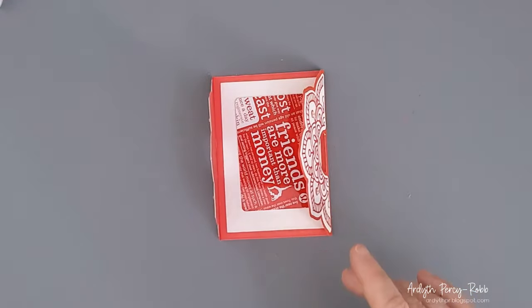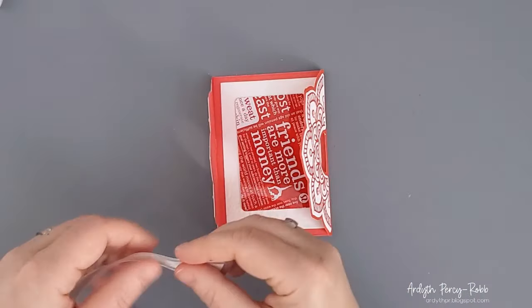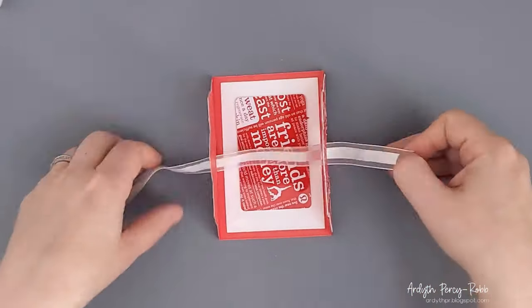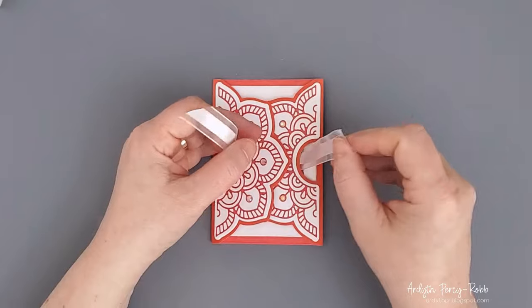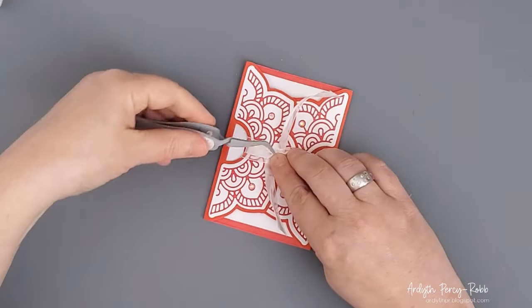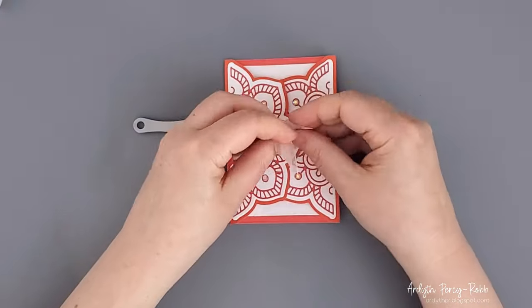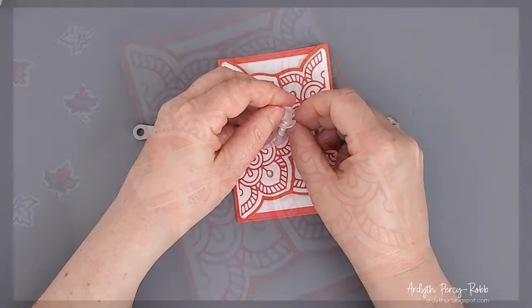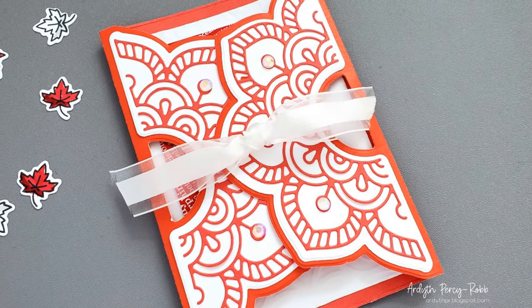And now to hold it closed, I chose some white organza ribbon from my stash. I threaded it through the holes on the sides and I tied a double knot on the front. I find it easiest to use my reverse tweezers to hold the first knot while I tie the second layer. It's such a pretty way to receive a gift card, don't you think?